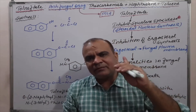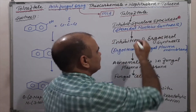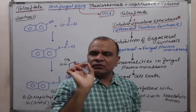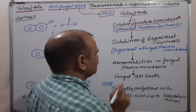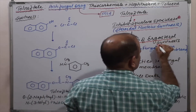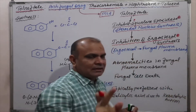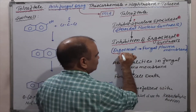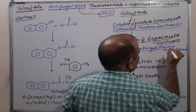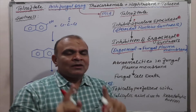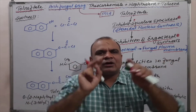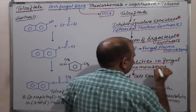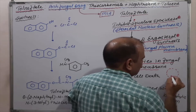Now, if we inhibit squalene epoxidase, there will be no synthesis of the steroidal nucleus. As you know, ergosterol is the steroidal nucleus — so inhibition of squalene epoxidase means inhibition of ergosterol synthesis. Ergosterol is present only in the fungal plasma membrane; it is the main component of the fungal plasma membrane, which results in abnormalities in the fungal plasma membrane.